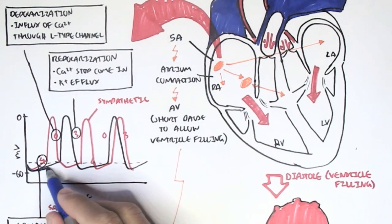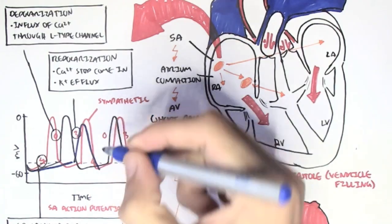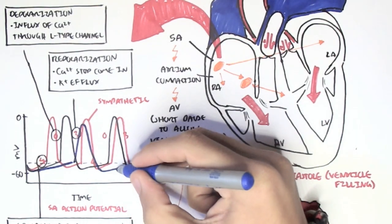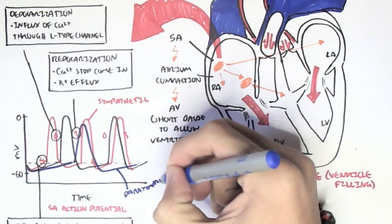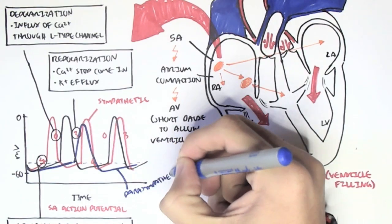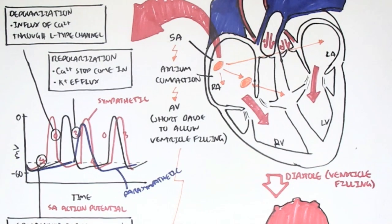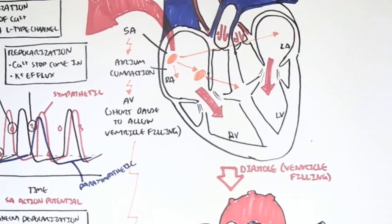In contrast, we have parasympathetic nerve innervation, which will cause the rate of spontaneous depolarization to decrease, slowing the heart rate — as we see when we eat, for example. On this graph, the parasympathetic activity is causing the spontaneous depolarization to be longer.